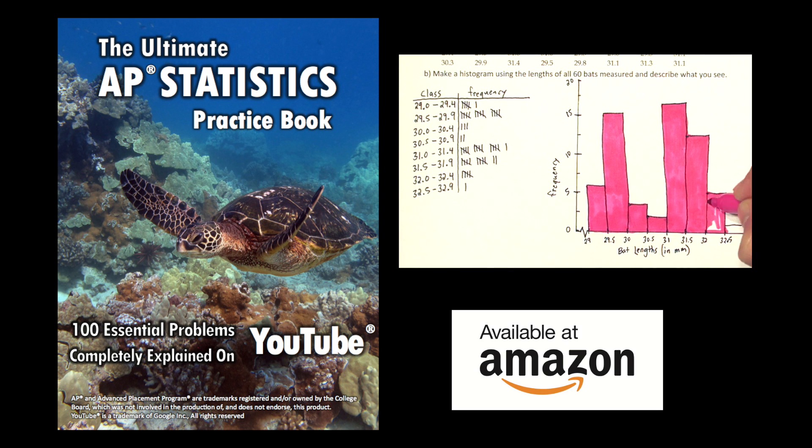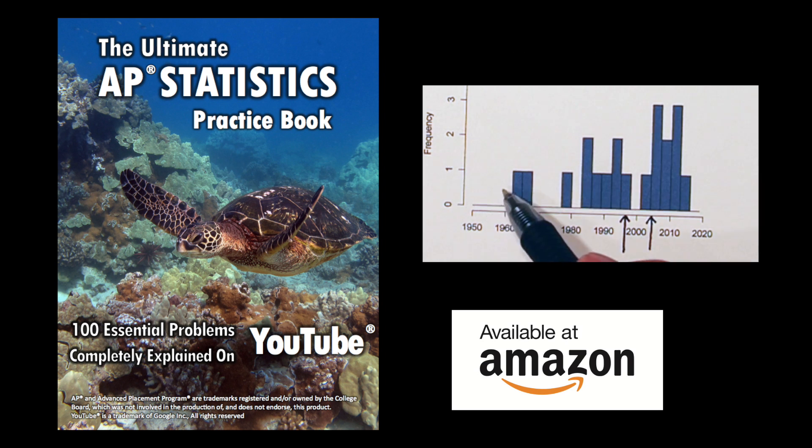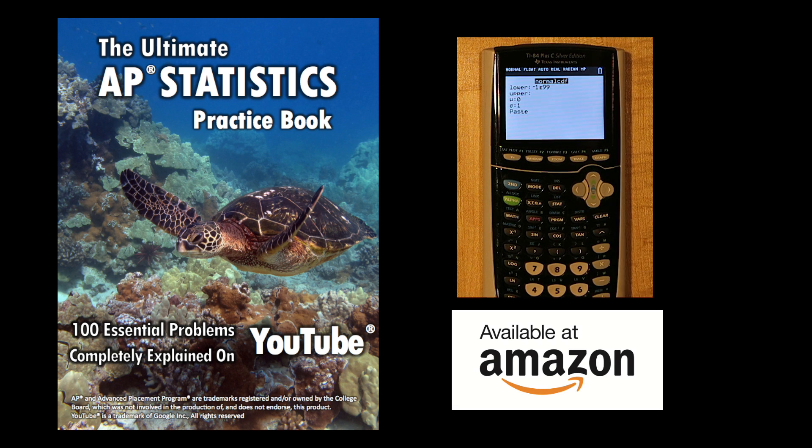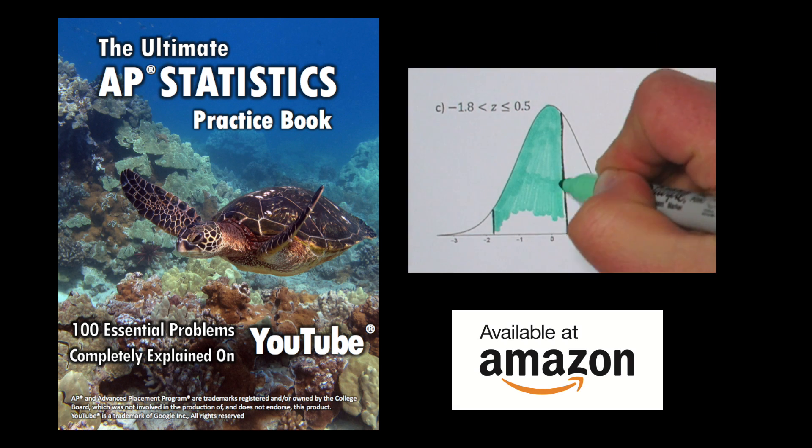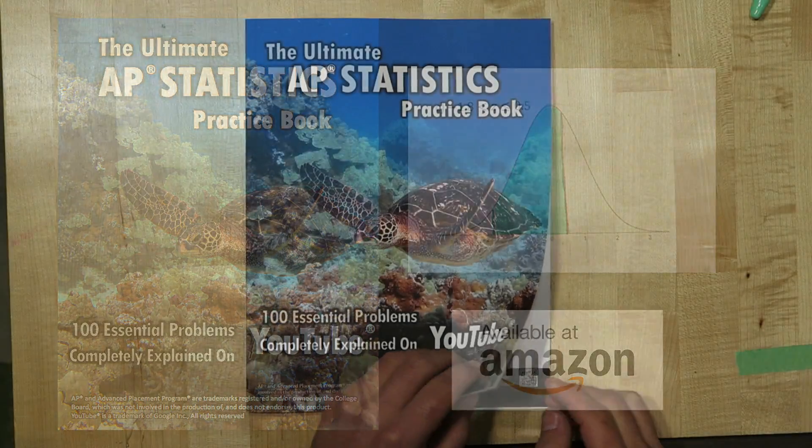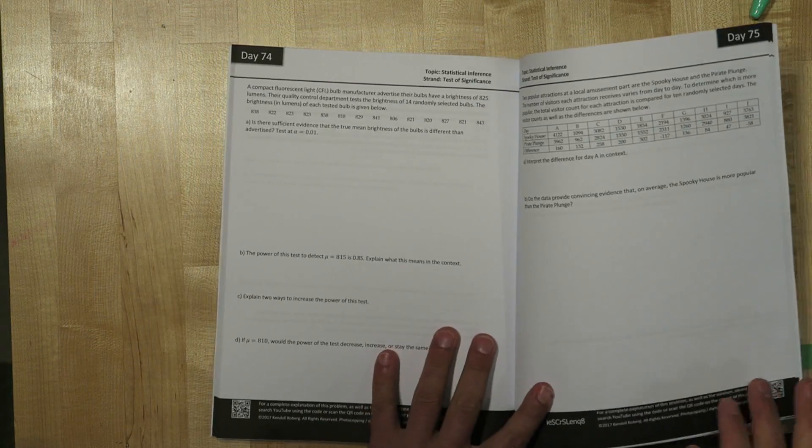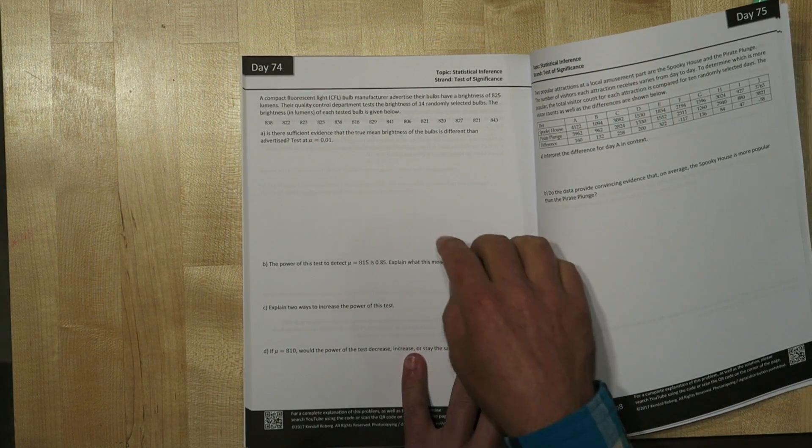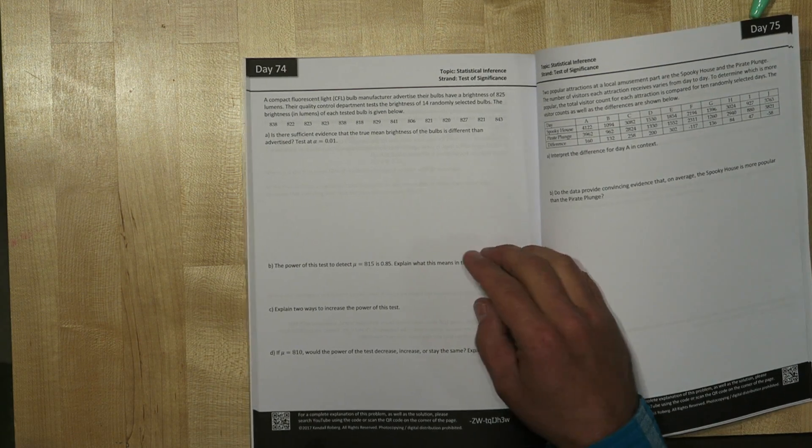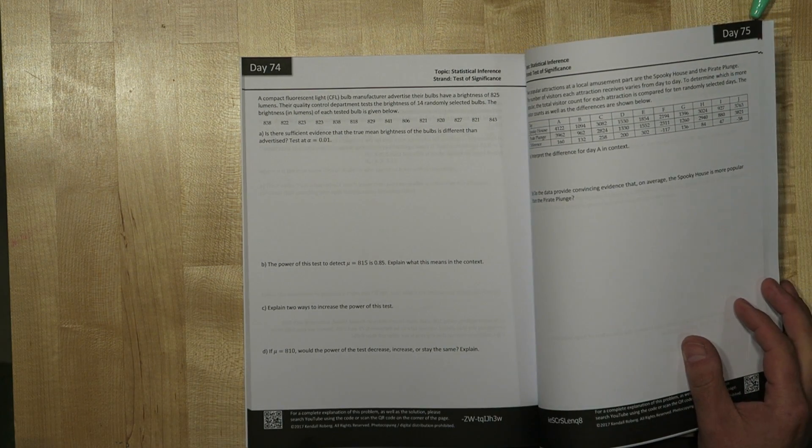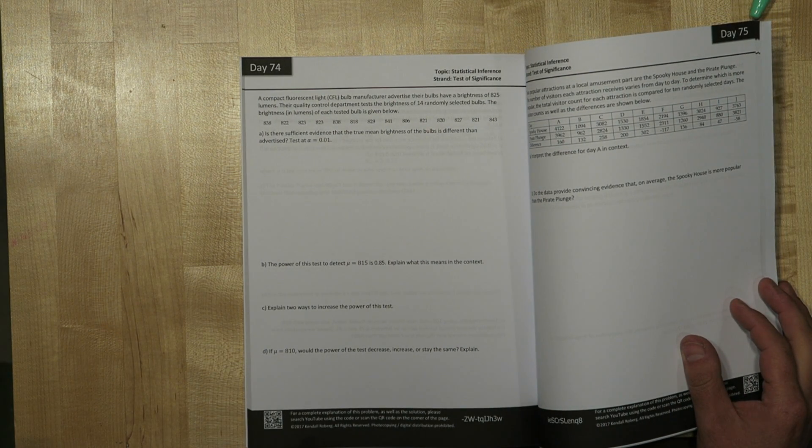If you liked my explanation for this problem, you might also like my book, The Ultimate AP Statistics Practice Book. It's available on Amazon and I'll put a link in the description. But this problem, number six on the AP exam this year, is pretty similar to problem 74 in the book, so I'll link to the video explanation of this problem as well so you can learn more about power.